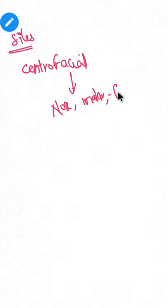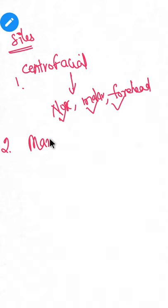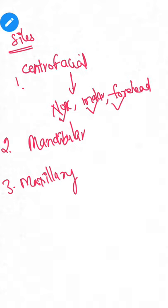We see this in pregnancy also at the nose, malar eminence, and forehead. The second is mandibular, where pigmentation is present in the mandibular area. Third is maxillary, where brown color is present at the maxillary areas. So depending upon the sites, it can be either centrofacial, mandibular, or maxillary.